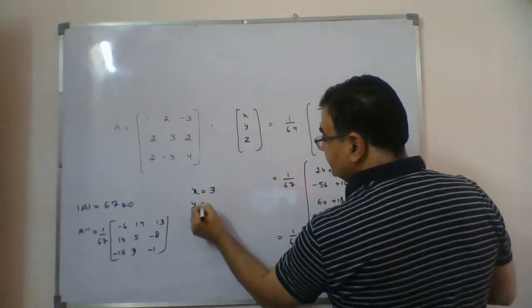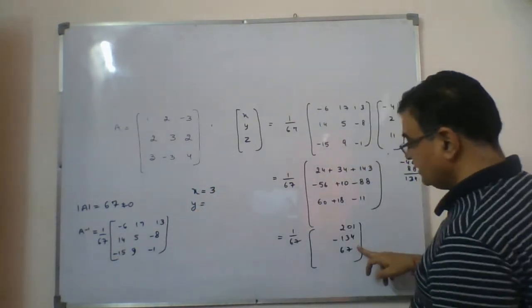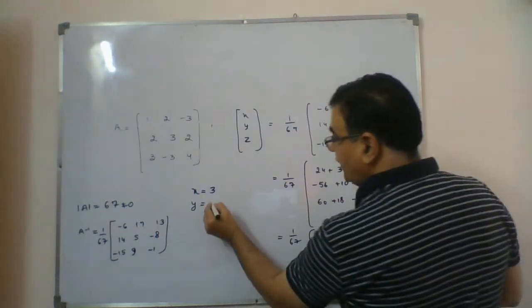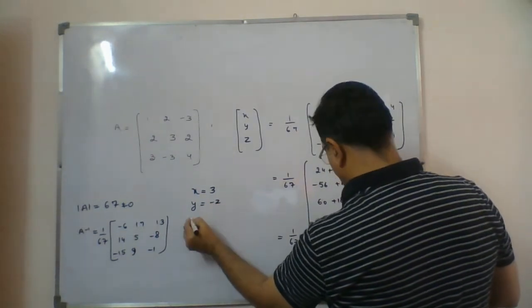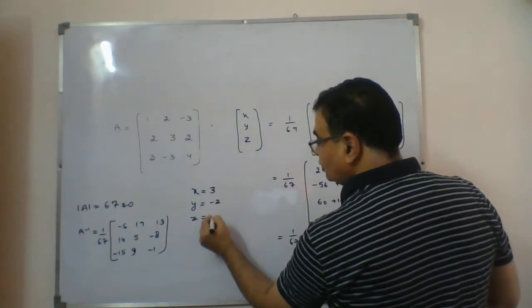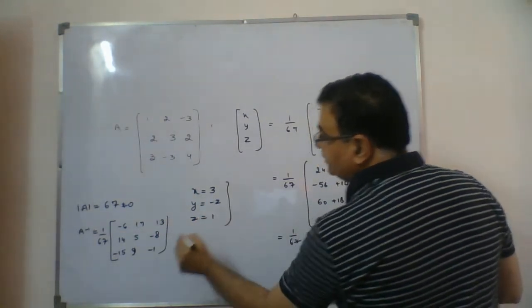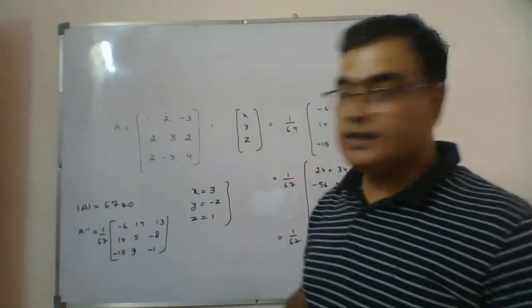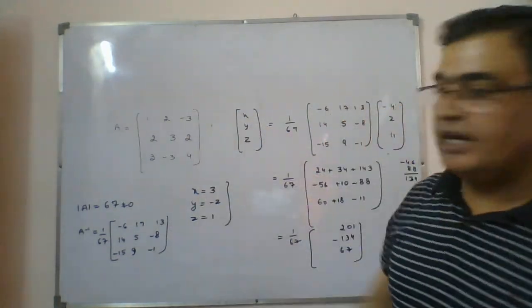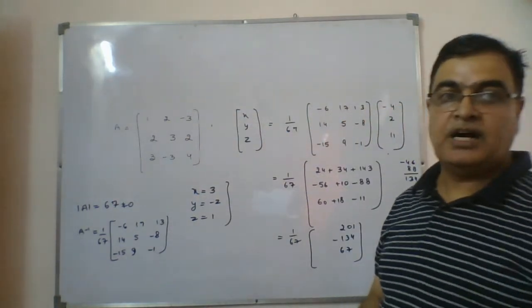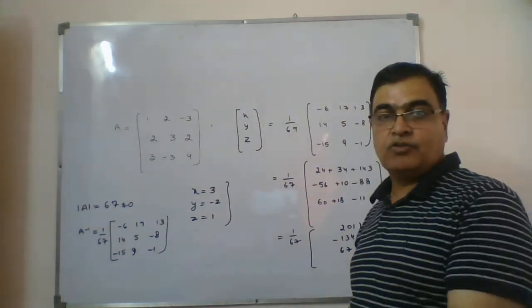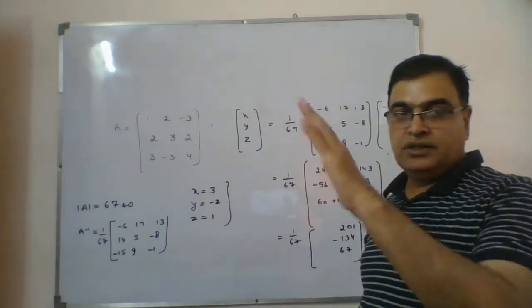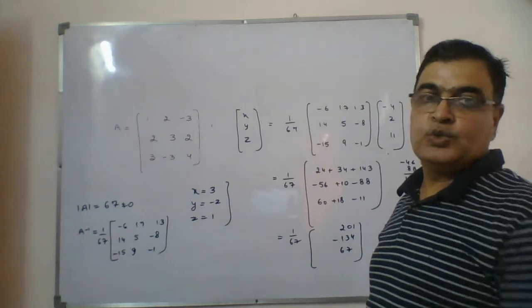Now solving: x is clearly 201/67 = 3 (since 67×3 = 201). Y comes out to be -2, and z comes out to be 1. So this you can calculate easily. So A inverse — if they ask for it — you can calculate that and then use it to solve the system.